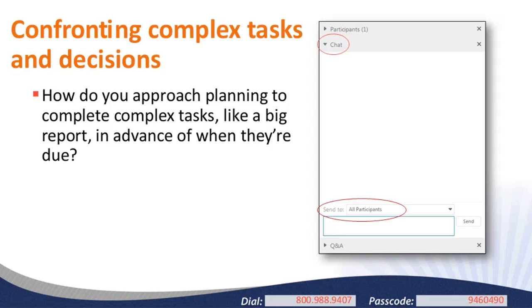The speed and volume of your responses indicates that you all, like many of us, try to be very planful and intentional in anticipating tasks and creating plans to get them done. My favorite is someone who chatted that they ask their wife for help—a strategy I should try more often. I'm sure I would be much more productive if I did that.